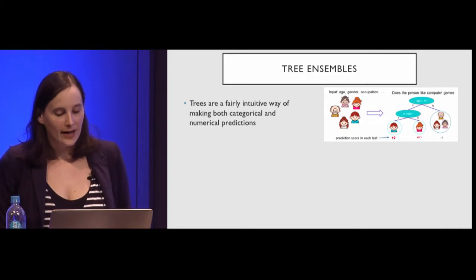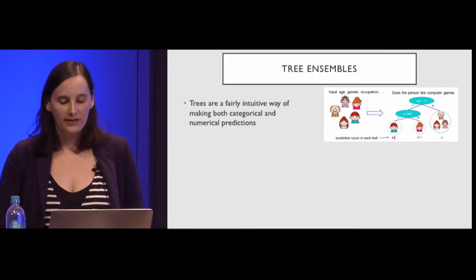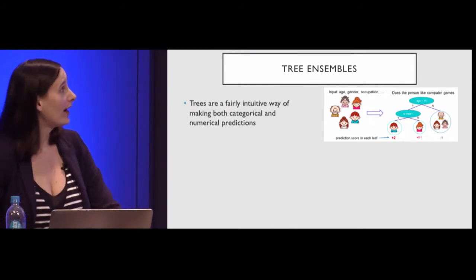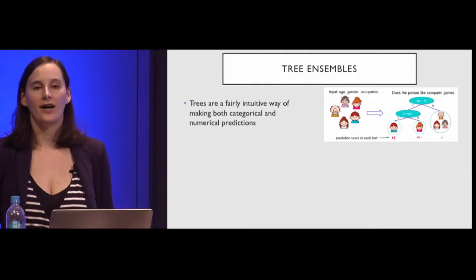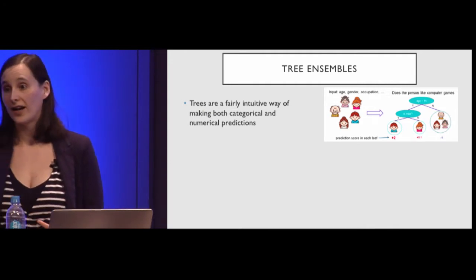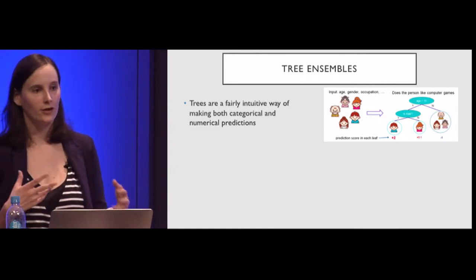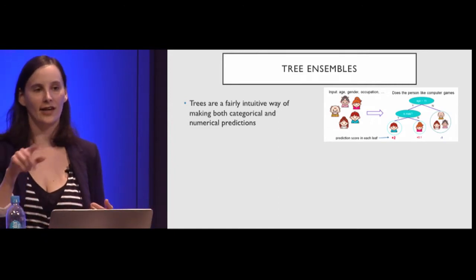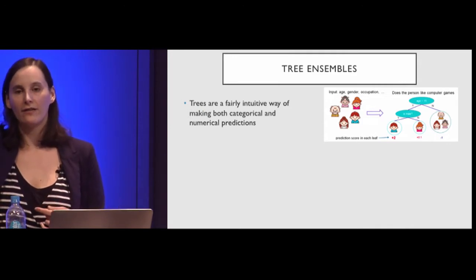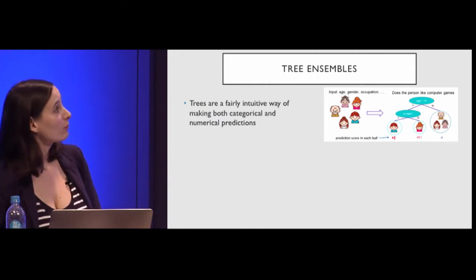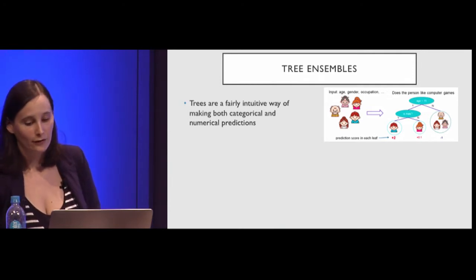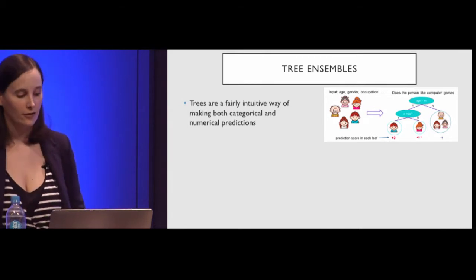The third kind of model covered by Apple is tree ensembles. First, what's a decision tree? It's probably the most intuitive way we might think to build a model. If you tried to hard code AI into your app, you might write it as a bunch of control statements — if, else, if, else. You could say: if the user is above or below the age of 15, and are they male, that might lead you to predict whether someone likes computer games.